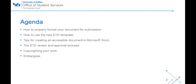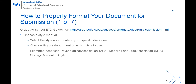A little background before I begin. An ETD is a means for graduate students to convey electronically the product of their research and scholarly activity. Previously, dissertations were required to be submitted in bound form, causing the UB libraries to be filled to the gills with books that are rarely accessed. In 2005, the submission process changed to only requiring electronic copies of theses and dissertations. You can find out more about the ETD guidelines by going to our website at grad.buffalo.edu/succeed/graduate/electronic-submission.html.